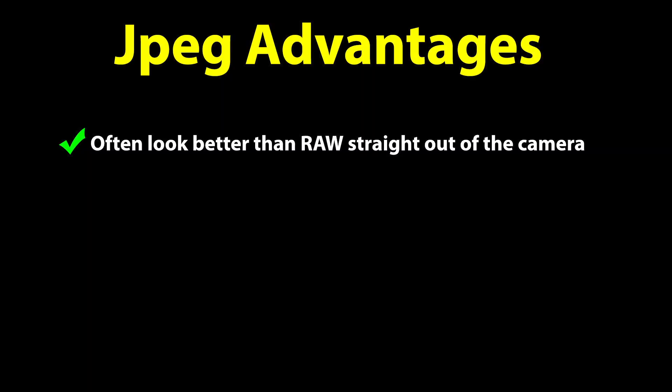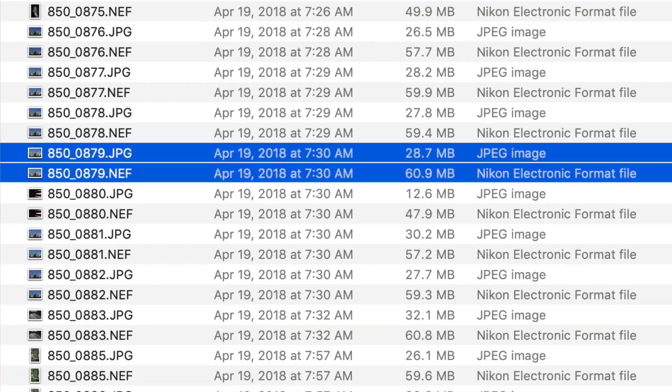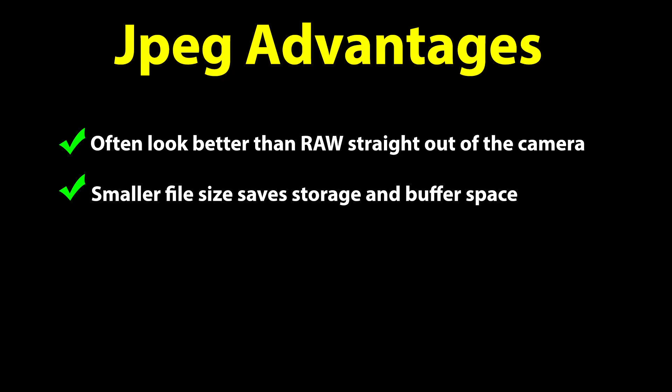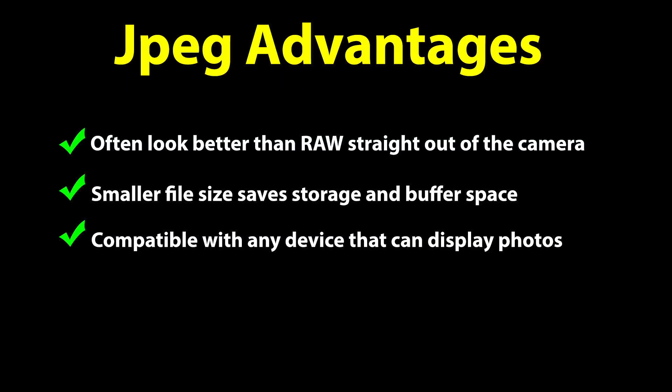Not only do JPEGs often look better right out of the camera than their raw counterparts, but they're also significantly smaller. The JPEG was shot at the absolute best quality available with my camera, and even then it was less than half the size of the raw file. This means JPEGs take up less space on your memory cards and hard drives, your camera's buffer can last longer before it fills up, and JPEGs are ready to go right out of the camera and compatible with pretty much any device. With raw, you need special software to view the images and must process and export them as JPEGs afterwards.